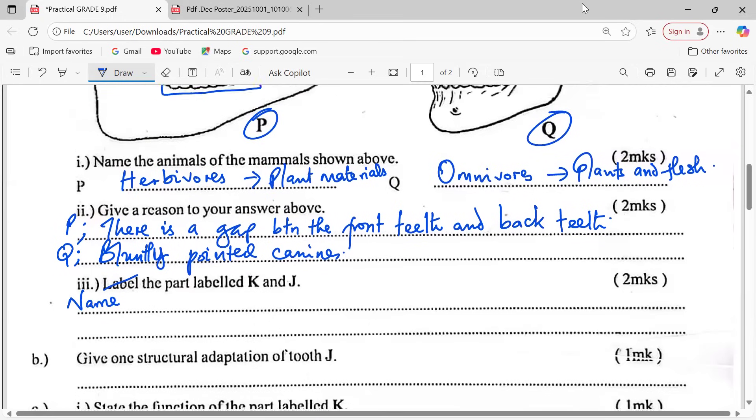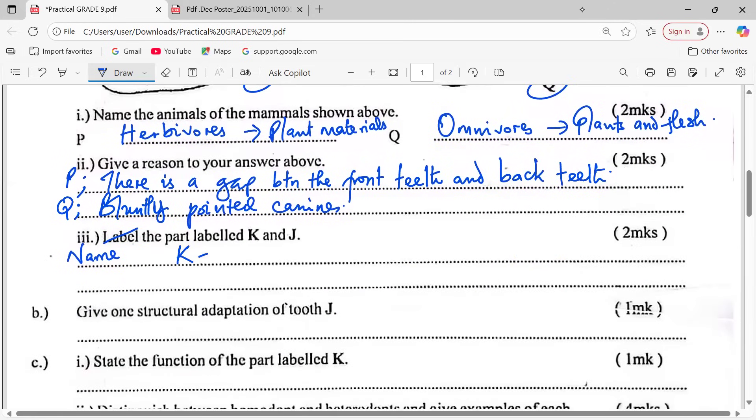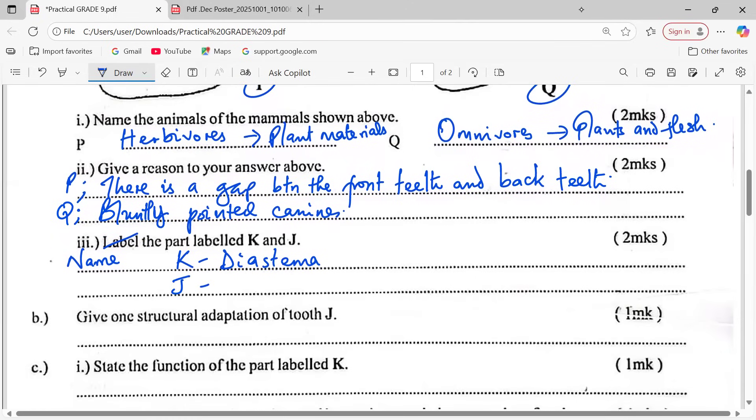Now label the parts. This should be named. Name the part labeled K and J. So K is the gap that we are calling diastema, a is the right diastema, then J, these are the front teeth that we call incisors.